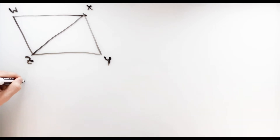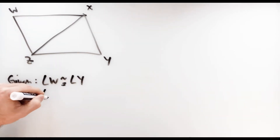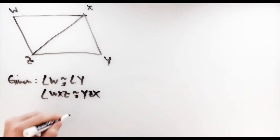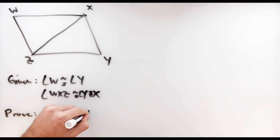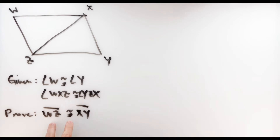In this first situation, we're given that angle W is congruent to angle Y, and angle WXZ is congruent to angle YZX. We're going to prove that segment WZ is congruent to segment XY. Notice what we are trying to prove — we're not trying to prove that the triangles are congruent, but rather that these two segments are congruent to one another. To do that, we'll first figure out a way to prove the triangles are congruent, and then go from there.